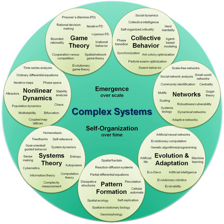Throughput — the rate of energy transfer between the system and its environment during the time it is functioning. Microsystem — the system closest to the client. Mesosystem — relationships among the systems in an environment. Exosystem — a relationship between two systems that has an indirect effect on a third system.